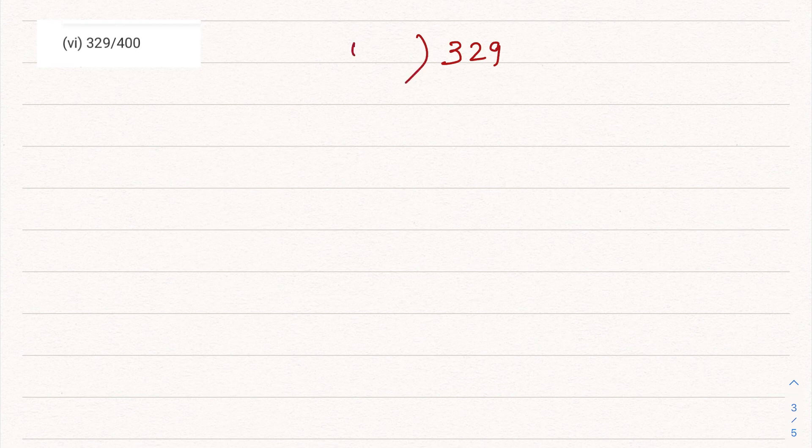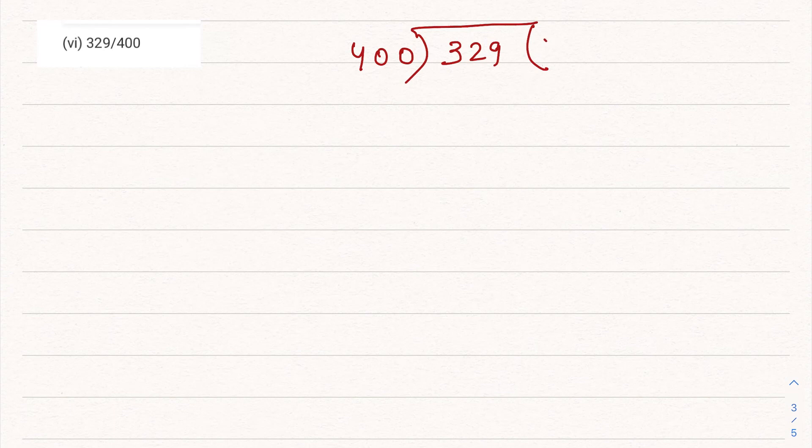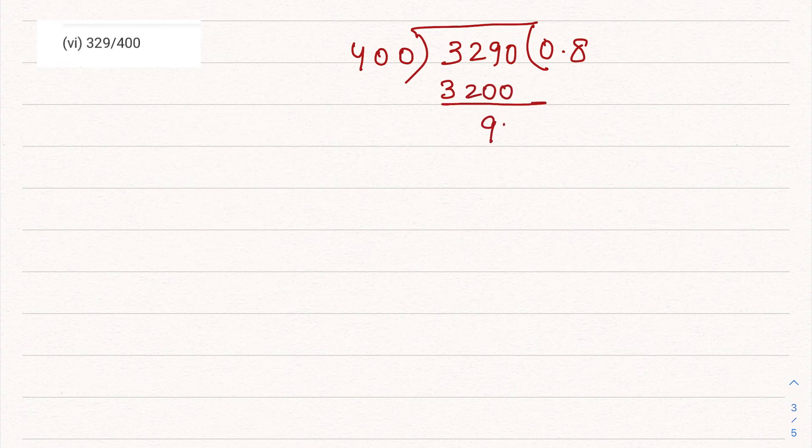Part 6: 329 divided by 400. Here we divide 329 by 400. We'll put the decimal first, making it 3290. Now 400 eights are 3200, and the remainder is coming as 90.